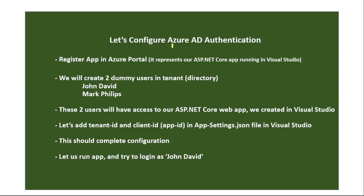In this video, let's configure Azure AD authentication for our ASP.NET Core Web App. In our previous video, we created our ASP.NET Core Web App and it is running in Visual Studio. Now, in this video, we will register this app in Azure Portal. We will have something called App ID or Client ID, and it will represent our ASP.NET Core Web App which is running in Visual Studio. For this app, we are going to add Azure AD authentication.